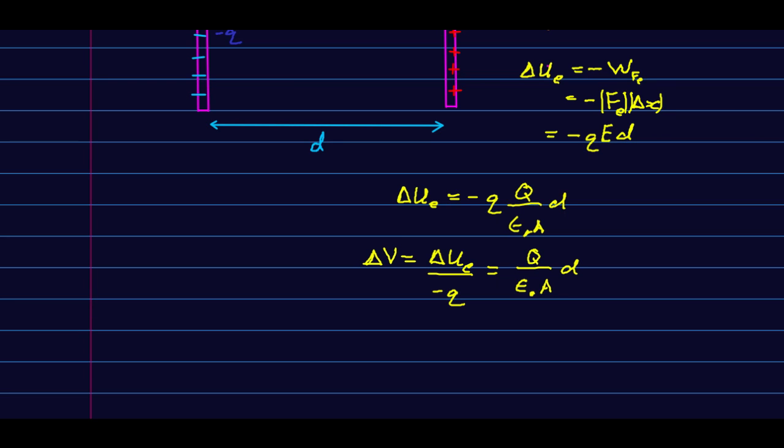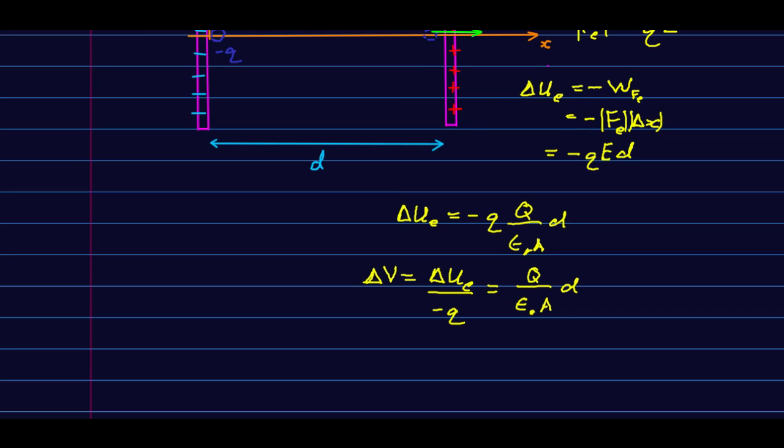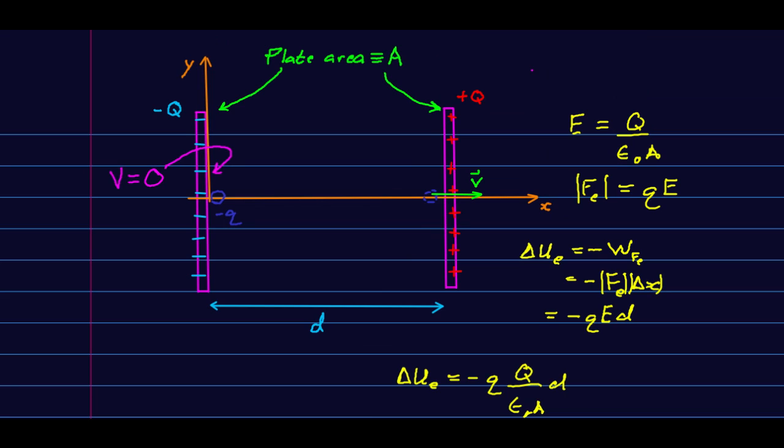So look at what we have now. We know that the potential on this plate is zero because we say so. And now we know the potential difference. It has to get higher as we move towards the positive plate, right? Potential is always high near positives and low near negatives. And this one came out to be Q over epsilon naught A, d.